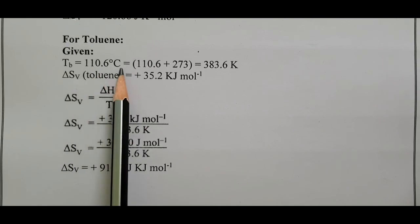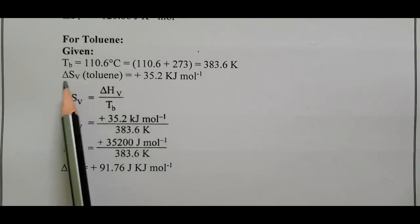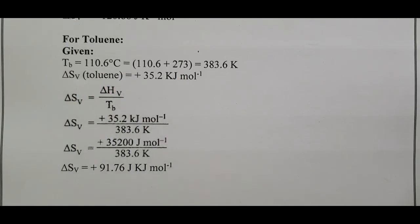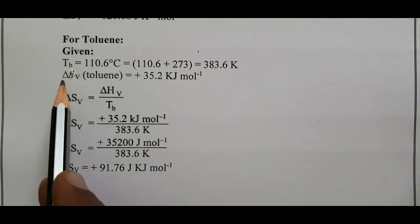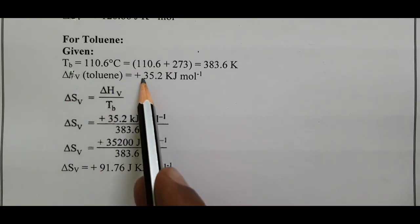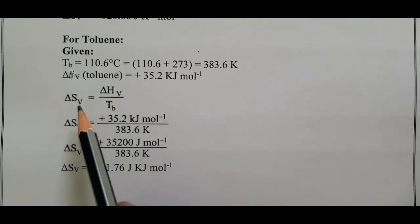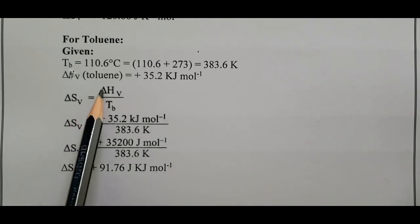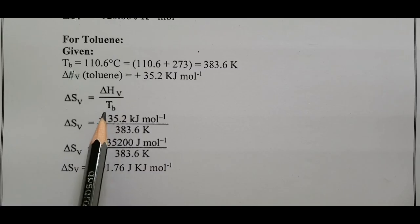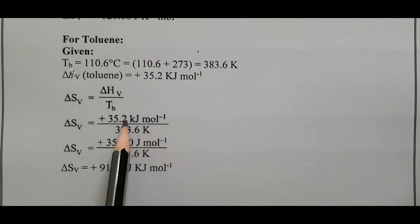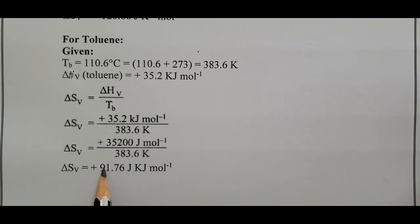For toluene, boiling point is 110.6 degrees Celsius converted to Kelvin. Delta H vaporization of toluene equals 35.2 kilojoule mole power minus 1. Using the formula delta S vaporization equals delta H vaporization divided by boiling point temperature, converting kilojoule to joule, delta S vaporization equals 91.76 joule Kelvin power minus 1 mole power minus 1.